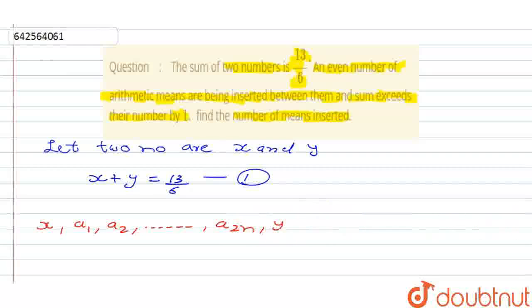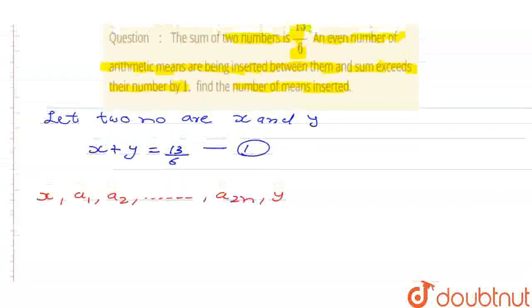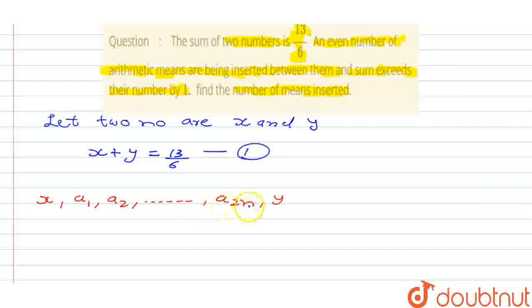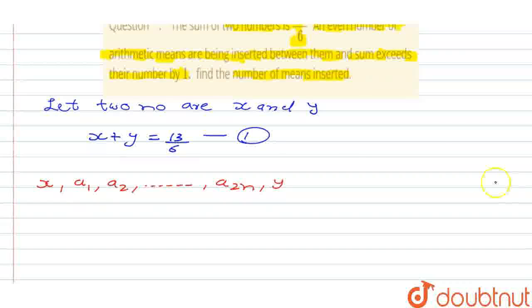Okay, so this is going to be the series. Now it is told that the sum of arithmetic means of this a1, a2, a1 till a2n exceeds their number by 1. Therefore, we can write.